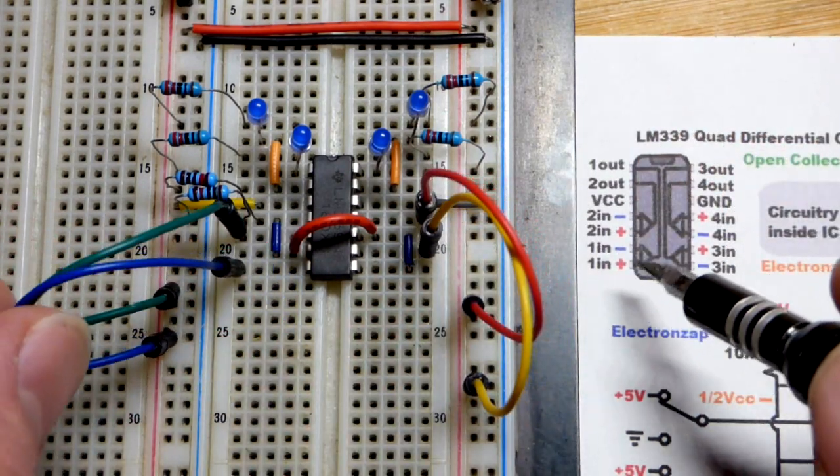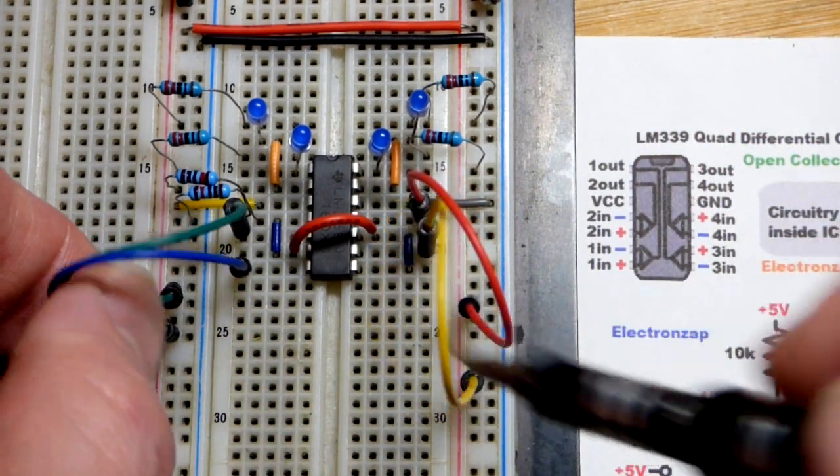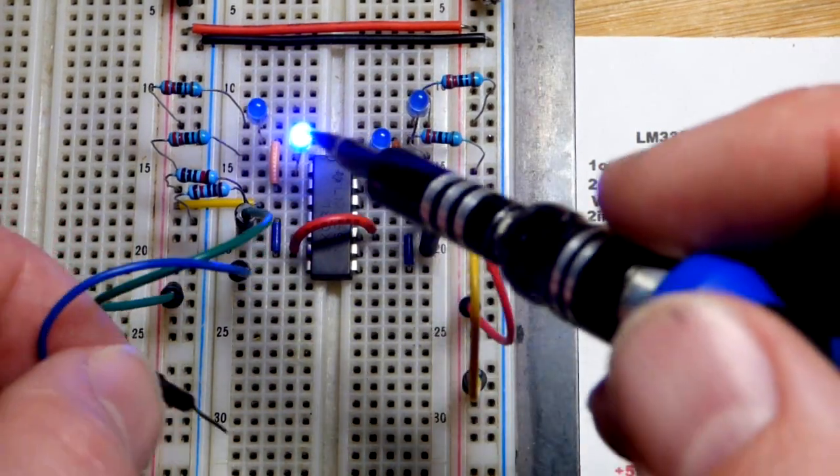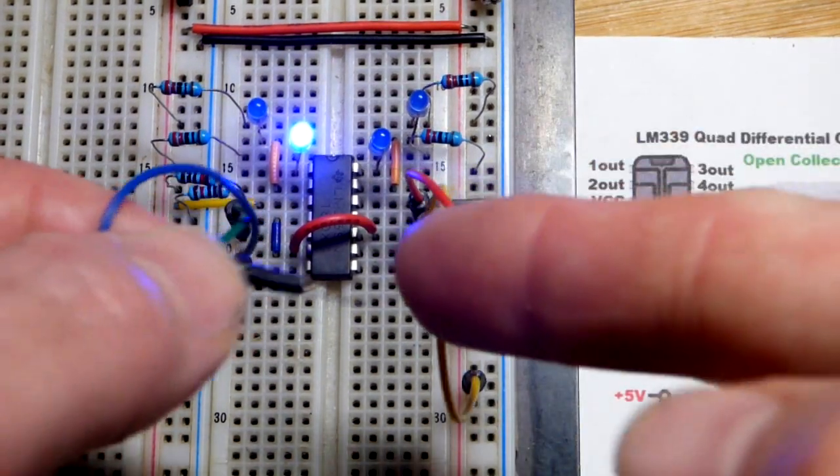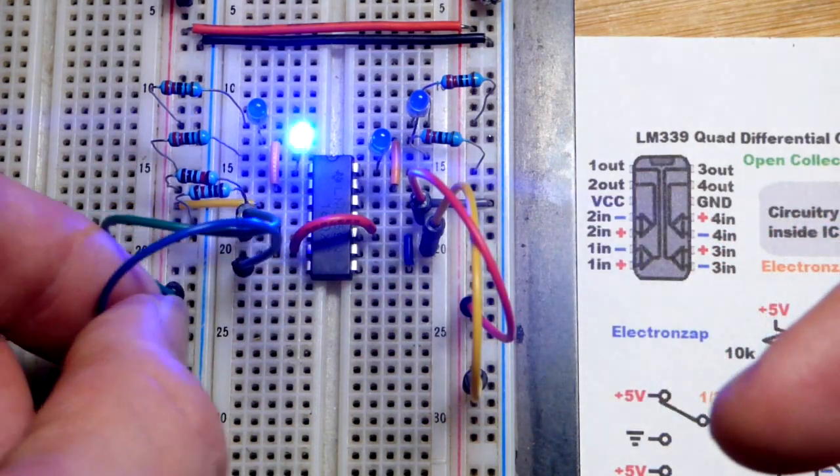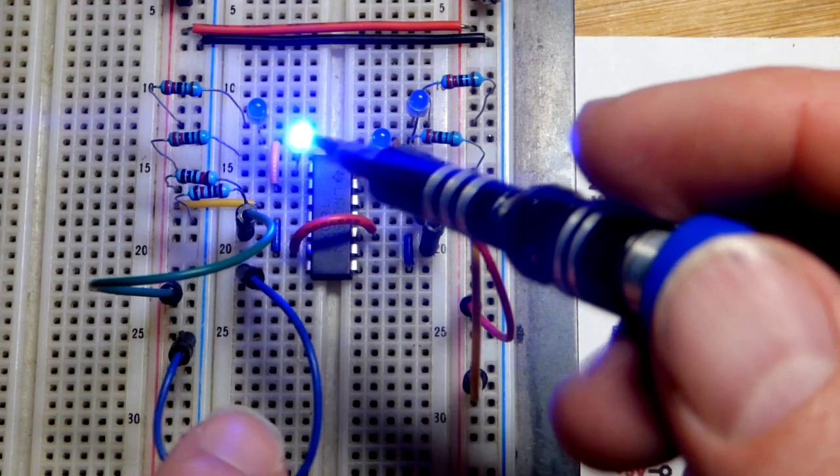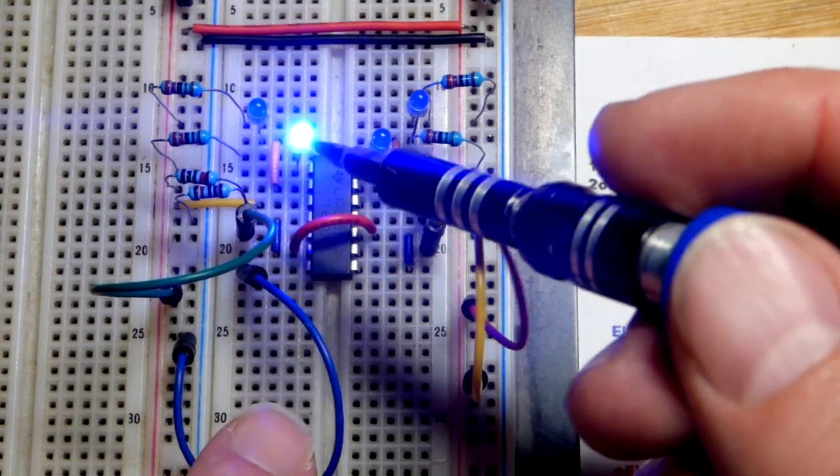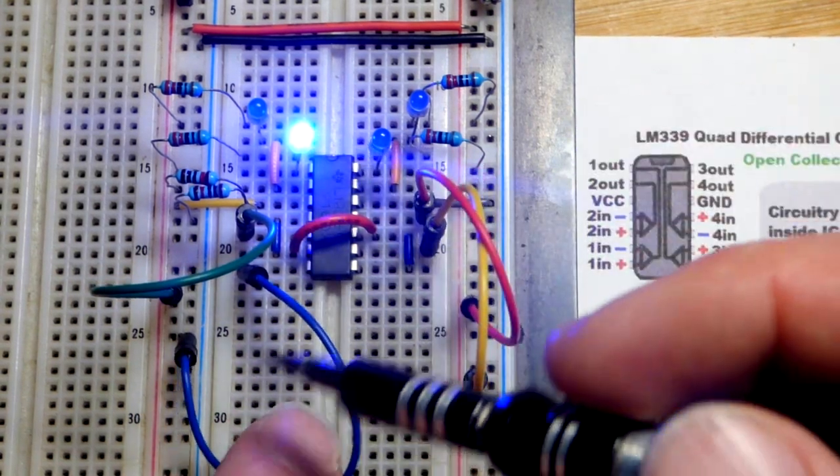We will start with number one down here. So that's blue. And when I move it, now it's not actually on. It's got stray signals. It's turning on and off rapidly. We give it full voltage and negative voltage, I should say, negative supply, zero volts. And now you can see it is on.